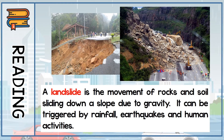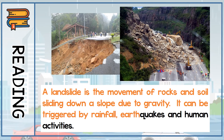Follow teacher. A landslide is the movement of rocks and soil sliding down a slope due to gravity. It can be triggered by rainfall, earthquakes, and human activities. Landslide is the movement of rocks — pergerakan batu — and soil, tanah, menggelongsor ke bawah disebabkan gravity. How does it happen? It can be triggered by rainfall, hujan, earthquake, gempa bumi, dan human activities. What is human activities? Apa human activities have to do with landslide? Can you tell me?